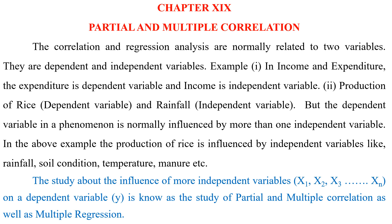Correlation and regression analysis are normally related to two variables — dependent and independent variables. For example, income and expenditure: expenditure is the dependent variable and income is the independent variable. Another example is production of rice as dependent variable and rainfall as independent variable. However, the dependent variable in a phenomenon is normally influenced by more than one independent variable.